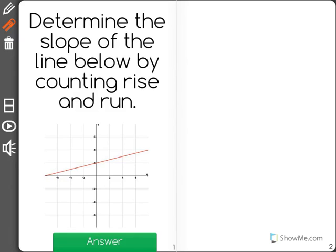Determine the slope of the line below by counting rise and run. Rise is how much the line goes up.